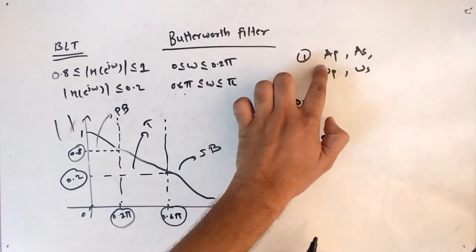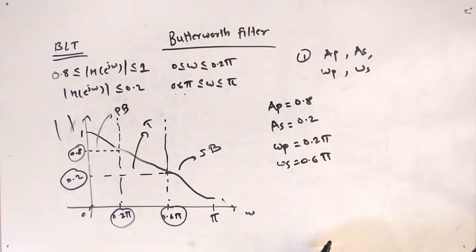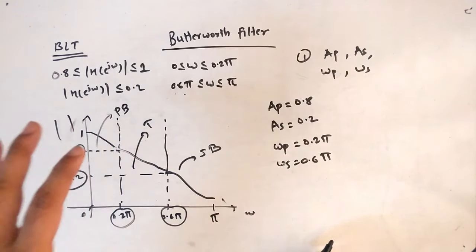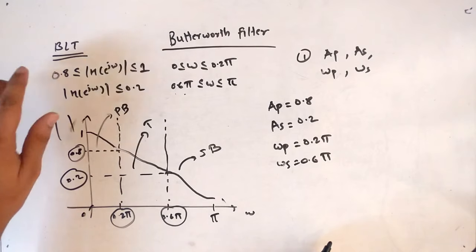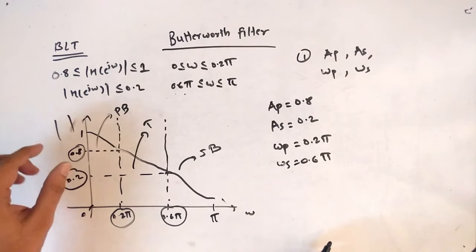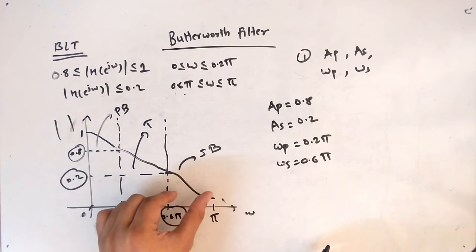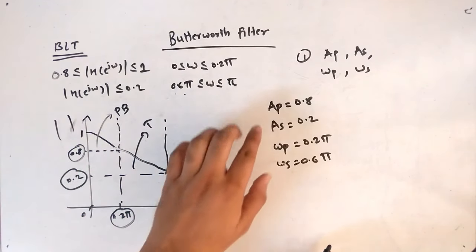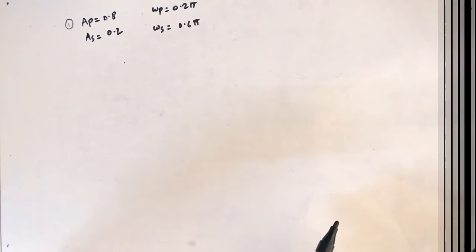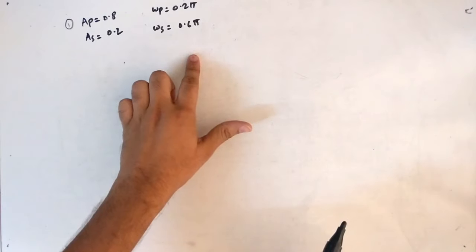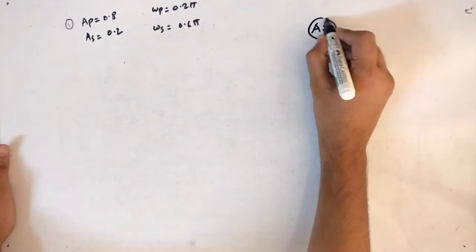To recap: we found passband attenuation, stopband attenuation, and passband and stopband frequencies from the graph. Now let's move to the second point. We need to find the analog filter first, because once we have that we can find the digital filter. For the analog filter we need analog frequency parameters.